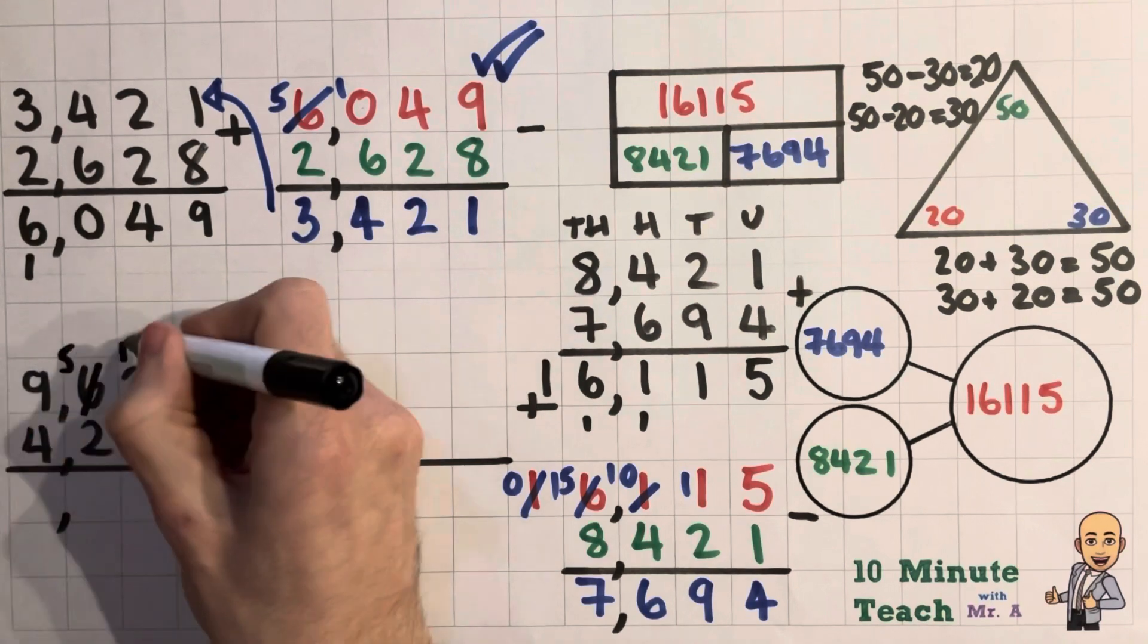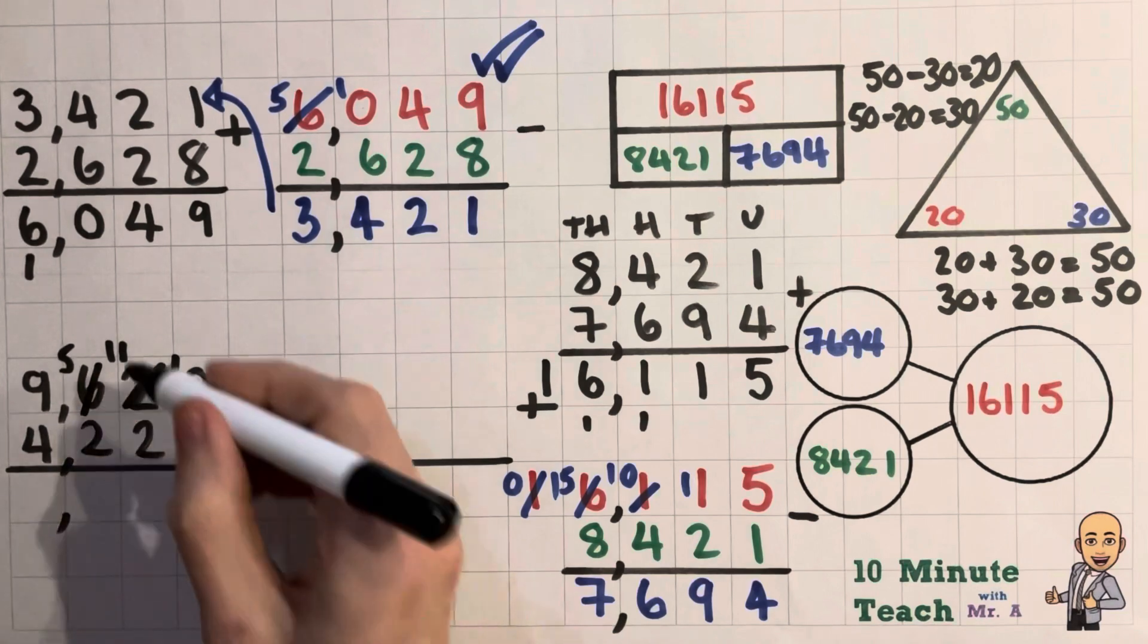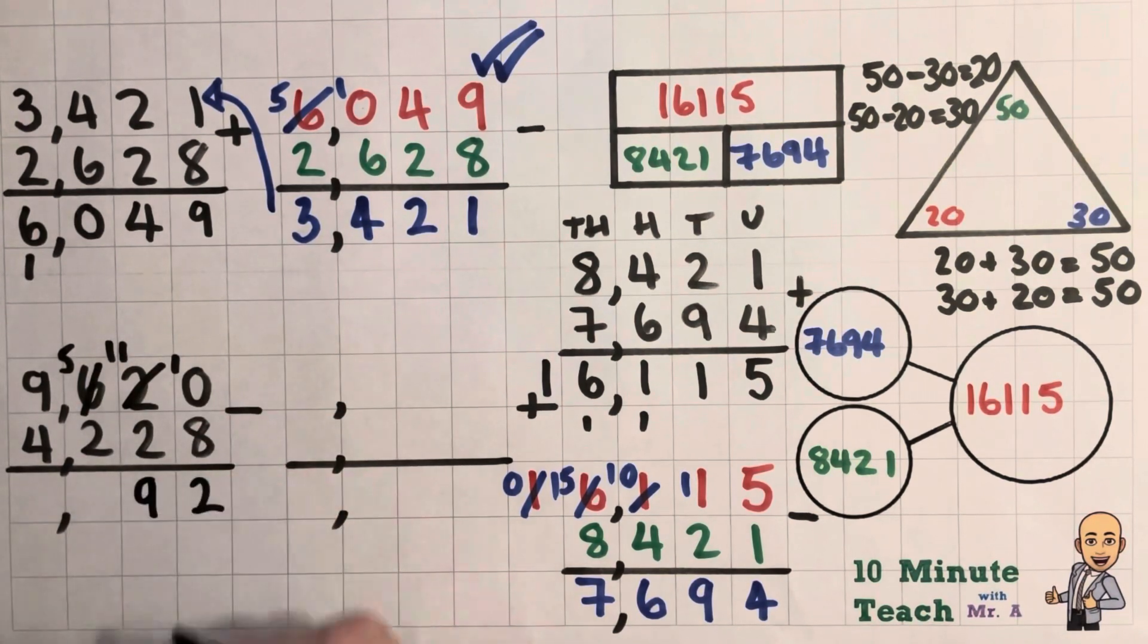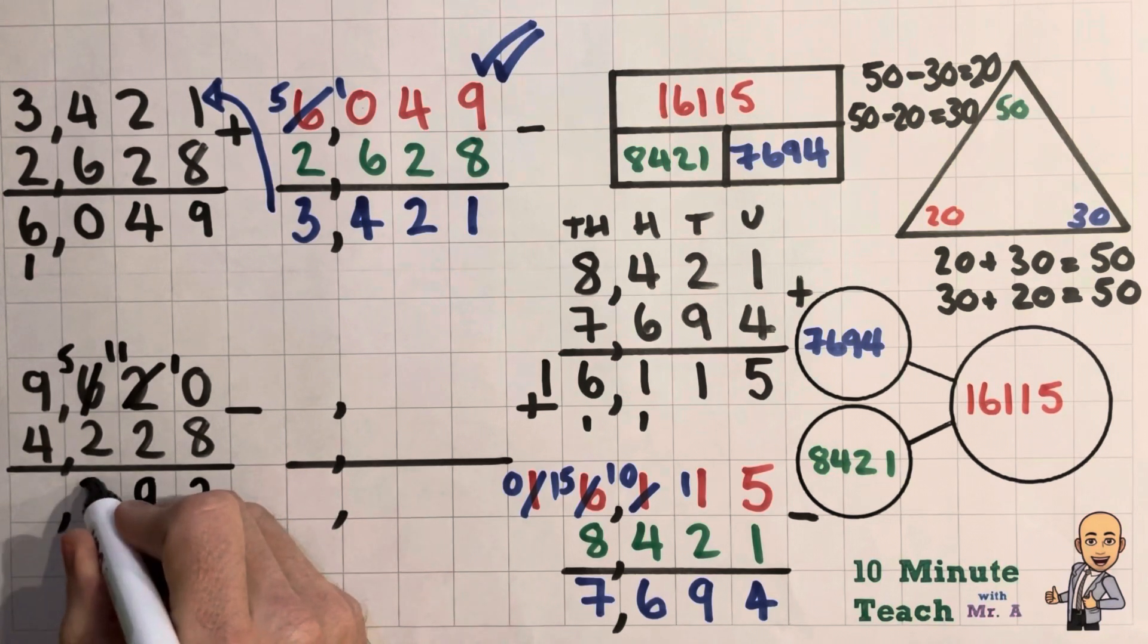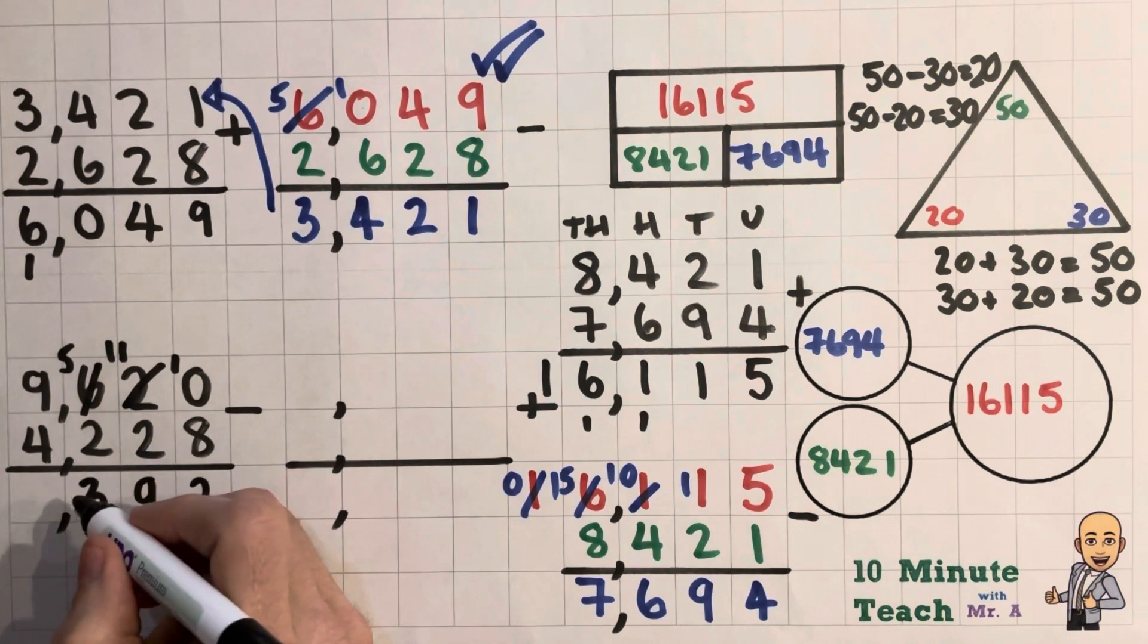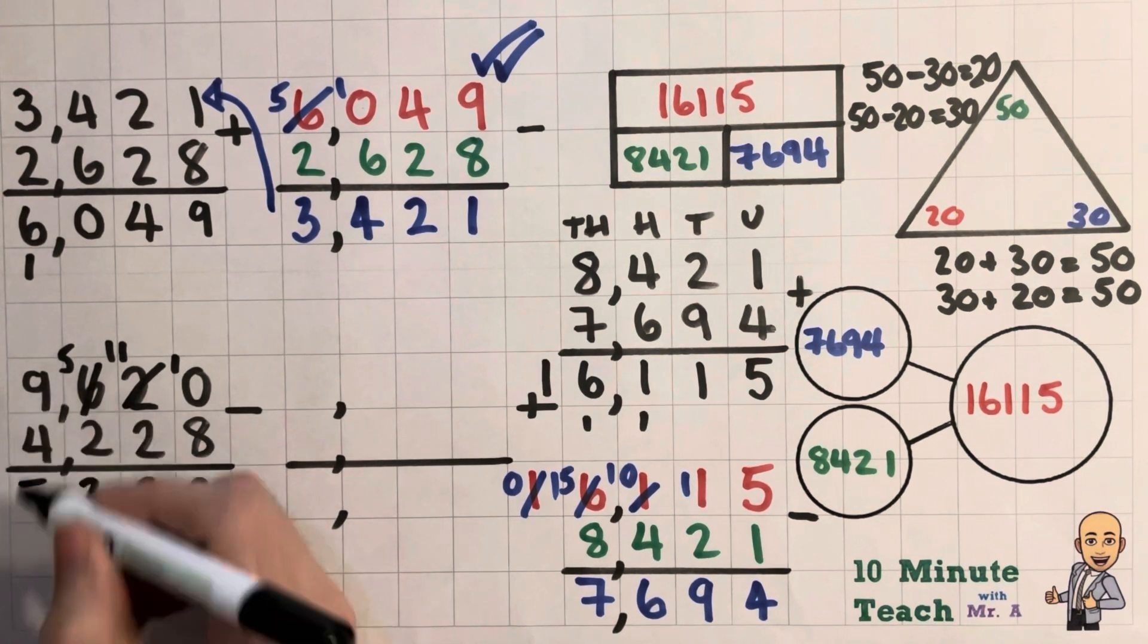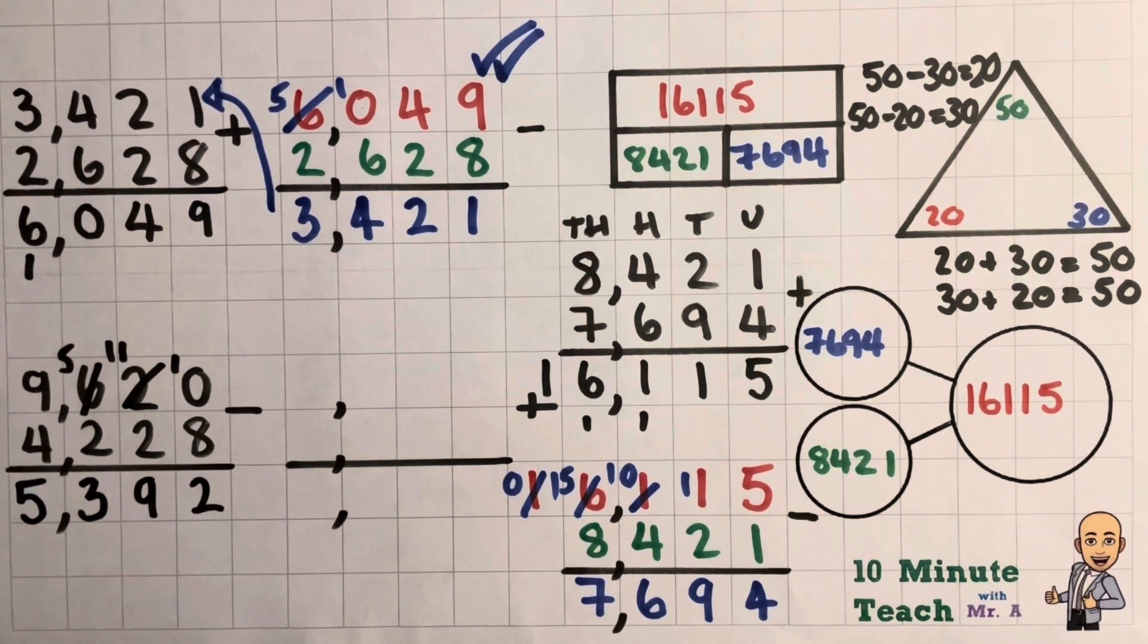10 take 20 I can't do, so I have to borrow from my hundreds to make 110. 110 take away 20 or 11 take 2 leaves us with 9 or 90. 500 take 200 leaves us with 300. And 900 take 400 leaves us with 5,000. There we go. Fantastic.